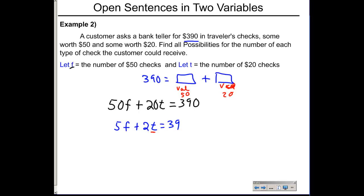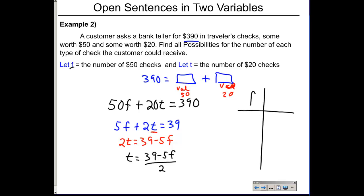Solve for T: subtract 5F from both sides to get 2T = 39 − 5F, then divide by 2, giving T = (39 − 5F) / 2. Now create a table inputting values of F. Starting with F = 1: (39 − 5) / 2 = 34 / 2 = 17. So one $50 check and 17 $20 checks.